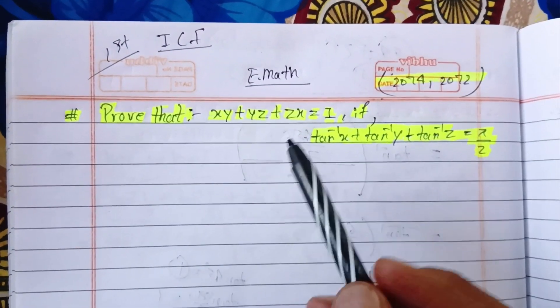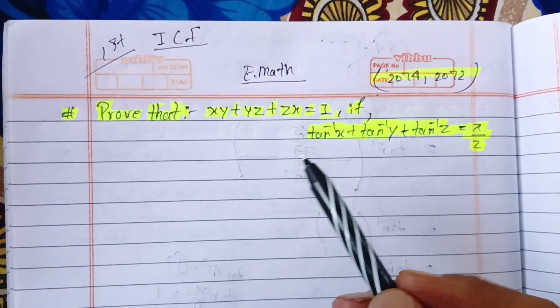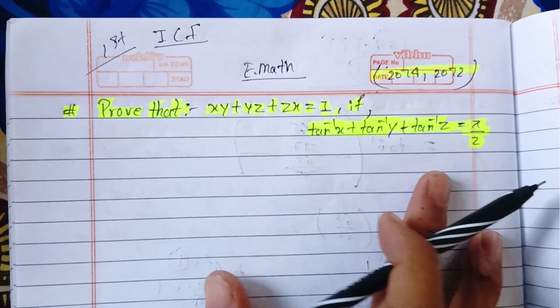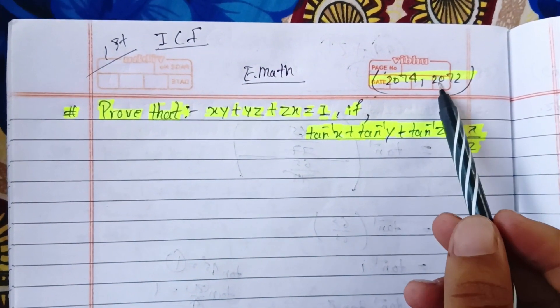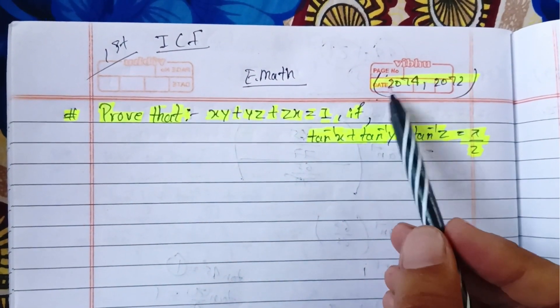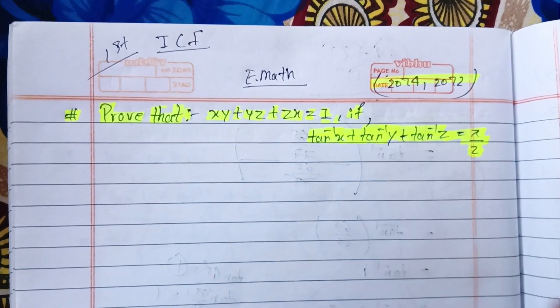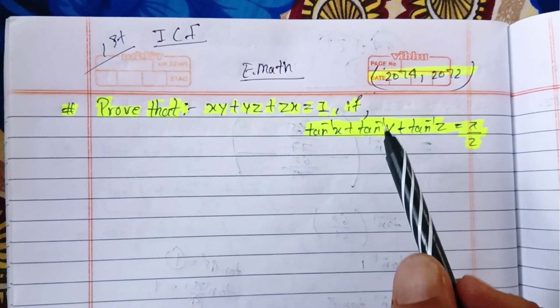Some questions are long questions. This is an important question — a question from 2072 and also a question from 2074.